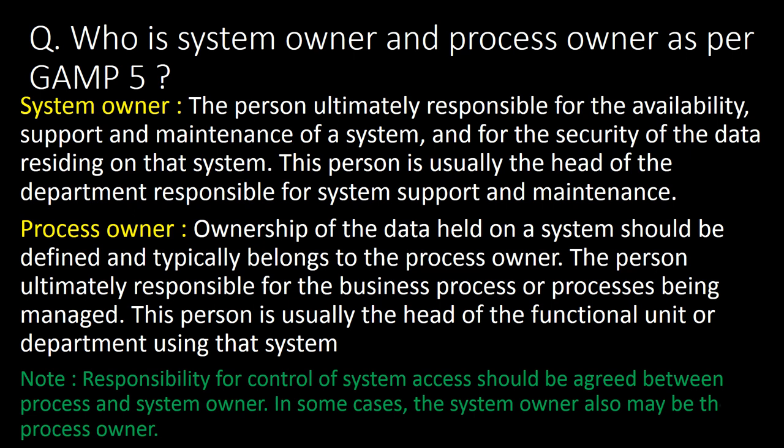Who is the system owner and process owner as per GAMP-5? As per GAMP-5, the system owner is the person ultimately responsible for the availability, support, and maintenance of a system and for the security of data residing on that system. This person is usually the head of the department responsible for system support and maintenance. The process owner is the person ultimately responsible for the business process or processing being managed. This person is usually the head of the functional unit or department using that system. Responsibility for control of system access should be agreed between the process owner and system owner. In some cases, the system owner may also be the process owner.